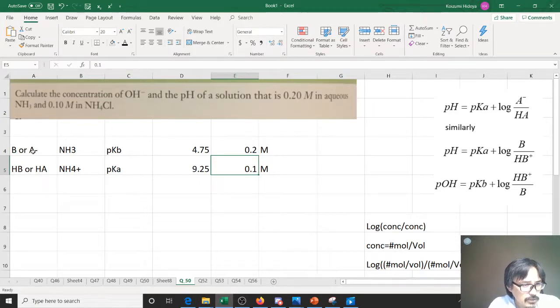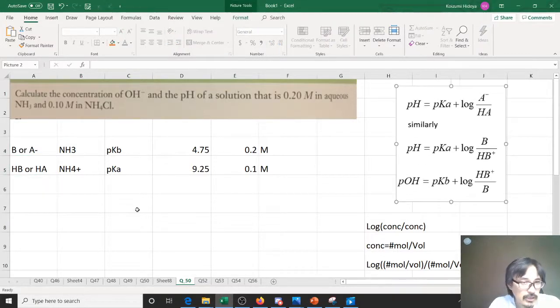Now, what you need to do is figure out which one is B, which one is HB or HA, and which one is A-. Obviously, this is HA and this is A-, or this is B and this is HB. Then you can use any one of these formulas to calculate.